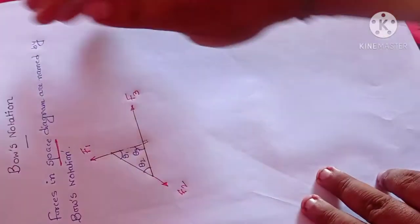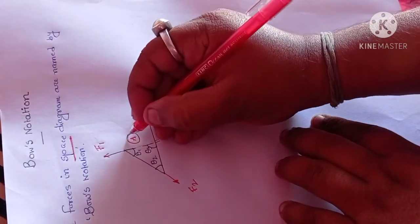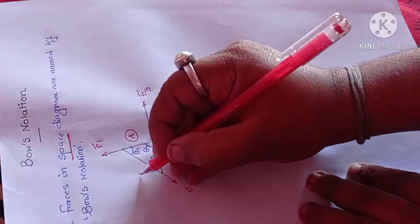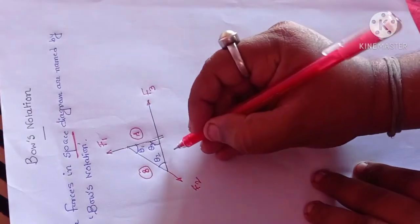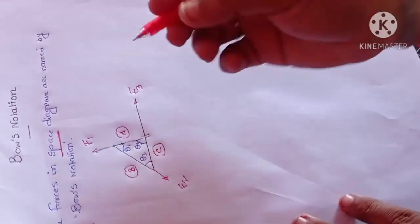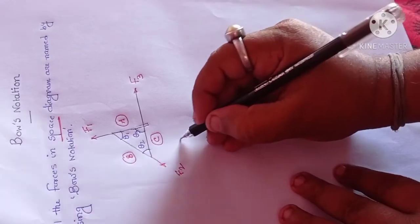How Bow's notation is given: say we have given A, this is a notation B, this is a notation C. We are moving anti-clockwise, you can see this direction is anti-clockwise. So how we will designate these forces?